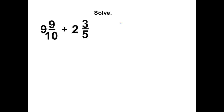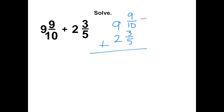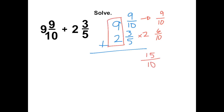Another way to solve this problem would be to line up your whole numbers and line up your fractions. Find the least common denominator between your fractions, which would be 10. So this fraction would stay the same, and this one you would multiply by 2 to get 6 over 10. When you add your fractions you get 15 over 10, and when you add your whole numbers you get 11 and 15 over 10.